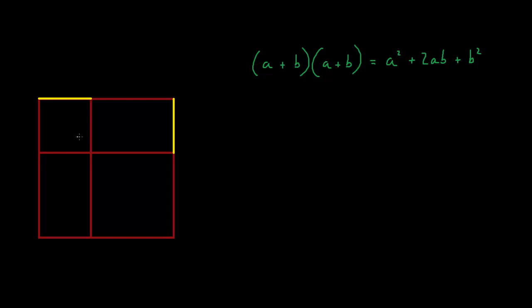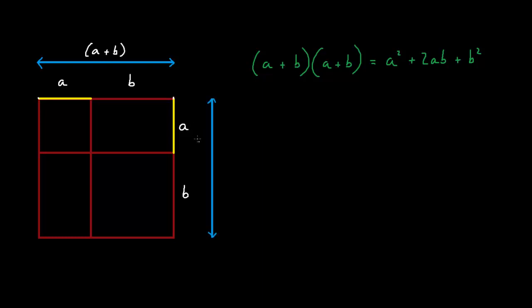Now, turn your attention to this perfect square over here. On this perfect square, we have a length. We have the length a, which is this yellow line, and we have the length b, which is this red line. We also have the length a on this side of the perfect square, and the length b on this side of the perfect square.